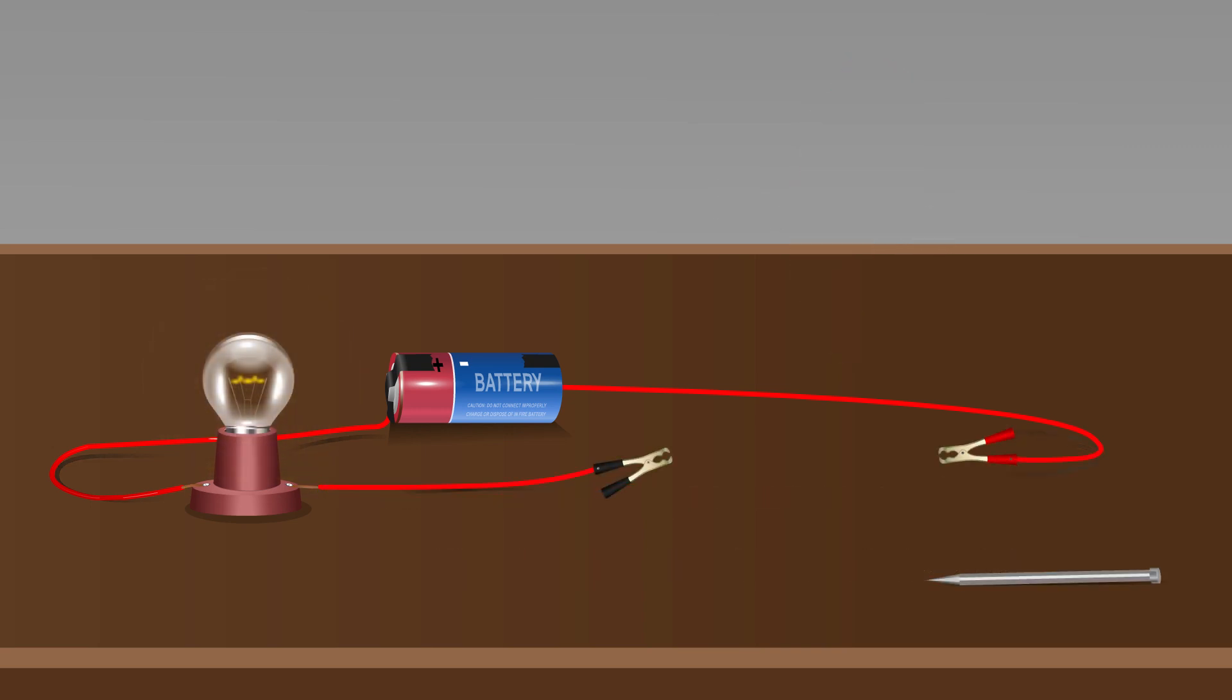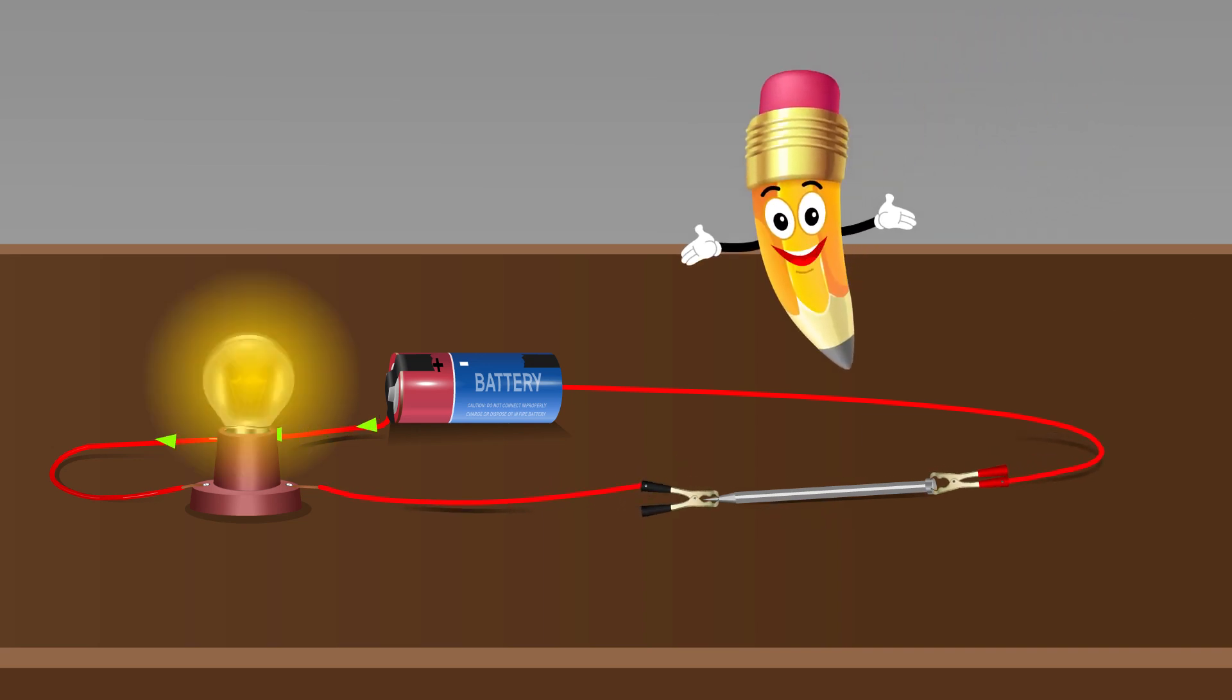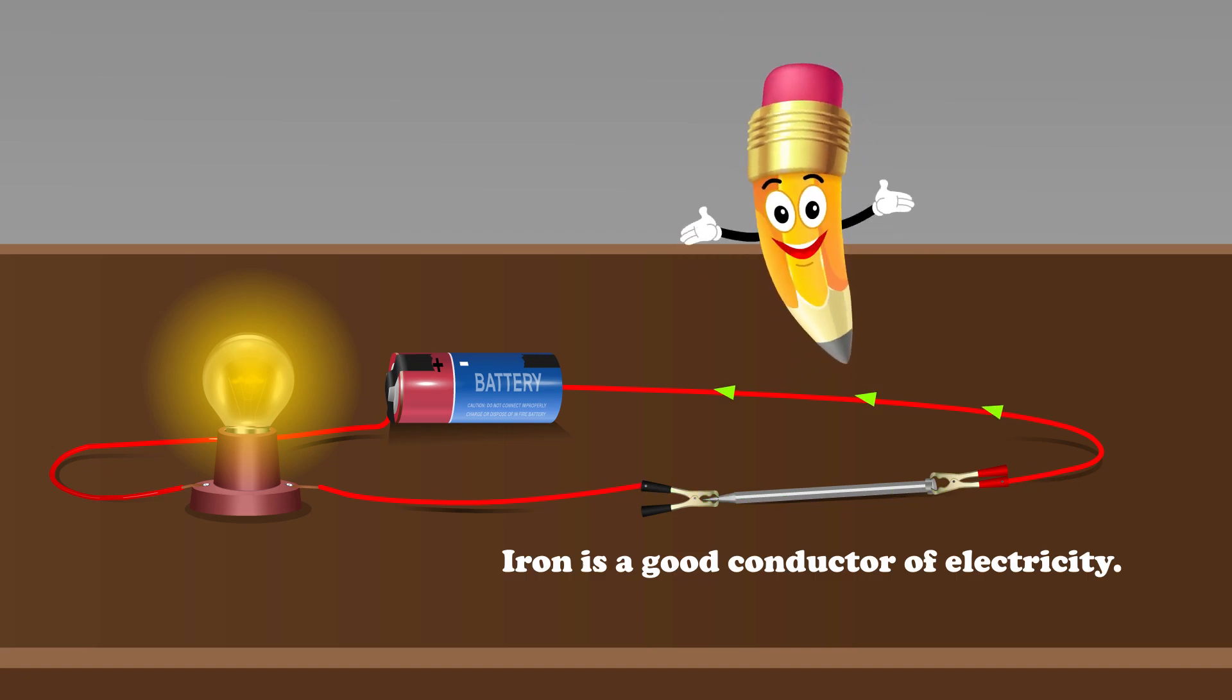Now let's test iron. We'll replace zinc with an iron nail in the circuit. The bulb lights up once more, proving that iron also conducts electricity.